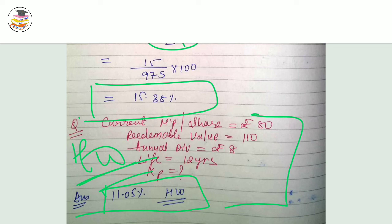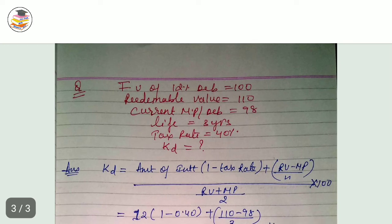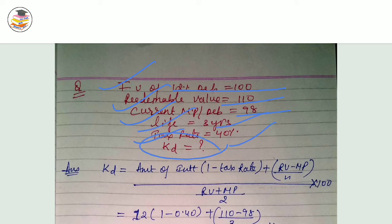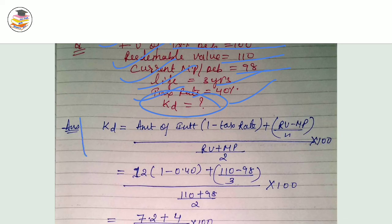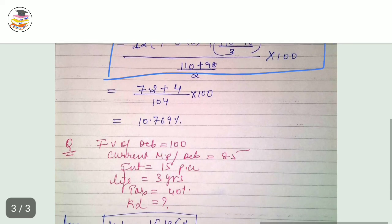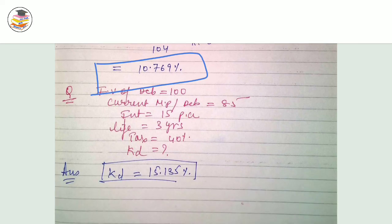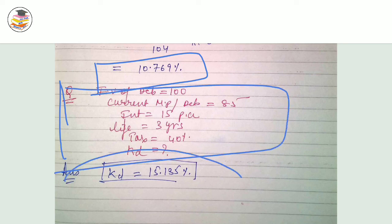Next is cost of debt. The homework question says: fair value of debenture is 100, redeemable value is 1010, current price is given, life is 3 years, tax rate is 40%. Find the cost of debt. You know the cost of debt formula — simply put the values in and your answer will come easily.